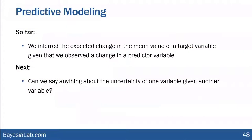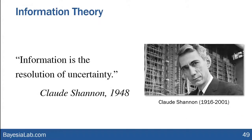So what have we done so far? We've inferred the expected change in the mean value of a target variable, given that we observed a change in a predictor variable — basically the absolute values. Now I want to switch gears and talk about what we can learn about the uncertainty of one variable given another. We'll take a quick detour into information theory and refer to concepts introduced by Claude Shannon, considering information as the resolution of uncertainty.